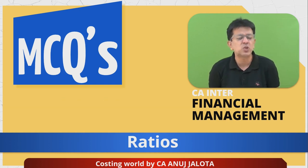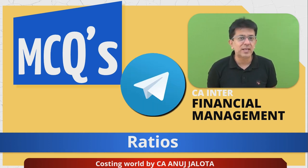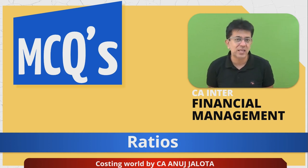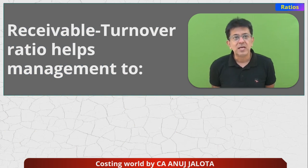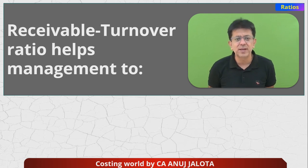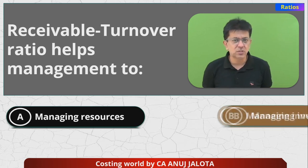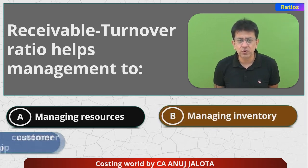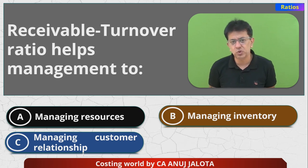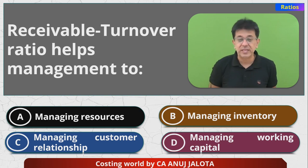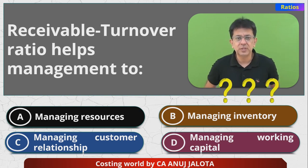Coming back to today's topic — we are doing MCQs. Beta MCQs, we are doing of the ratio chapter. One request from my side: join our Telegram channel for all updates coming for these two subjects, that is Costing and FM. So let's do it. Receivable turnover ratio, sometimes also called as debtors turnover ratio, helps the management to — four options: A) managing resources, B) managing inventory, C) managing customer relationships, D) managing working capital. Think of the correct answer — we have done that in class also. Think, comment below.